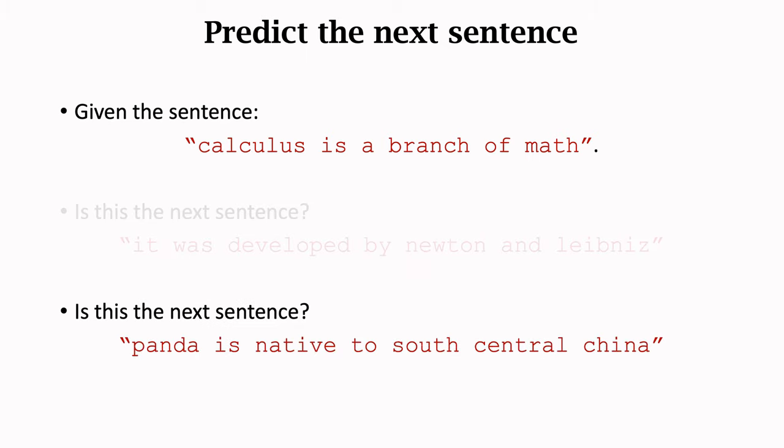What if you are given this sentence: panda is native to south-central China. Do you think this is the next sentence? Obviously not. The first sentence talks about calculus. The second sentence abruptly jumps to panda. If we train a language model, it should be able to perform such binary classification.